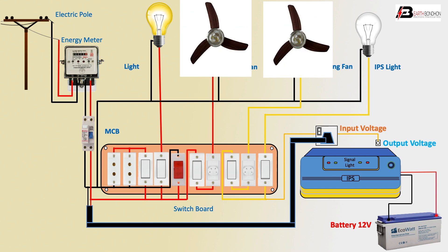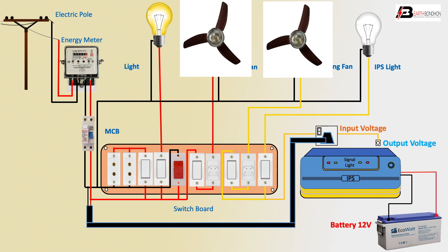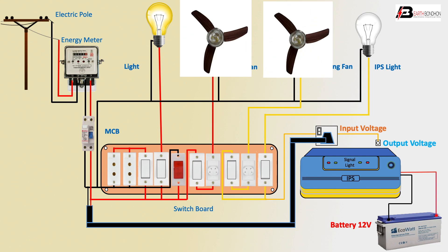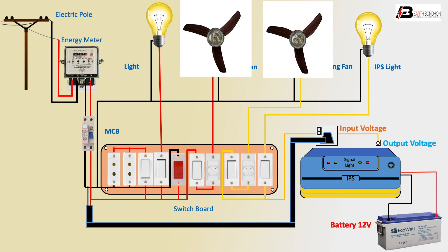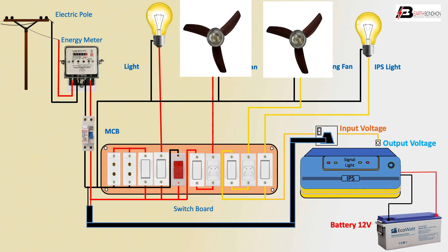Ceiling fan low with dimmer low; switch off — ceiling fan off. IPS light: light on — light on; light off — light off. Switch on — light on; switch off — light off. Very simple condition. This is how the IPS automatic control works — when the electric line is fully off, the IPS takes over automatically.